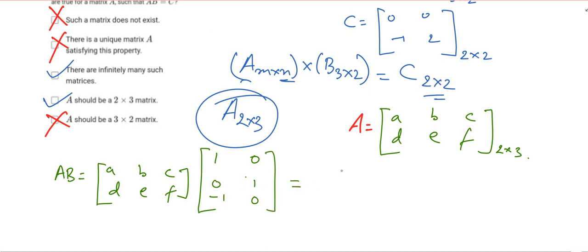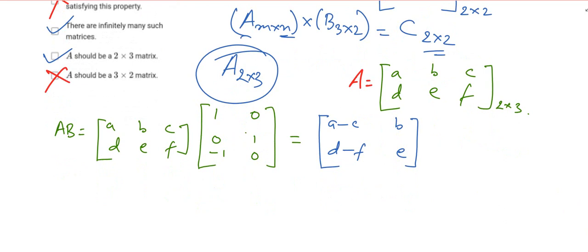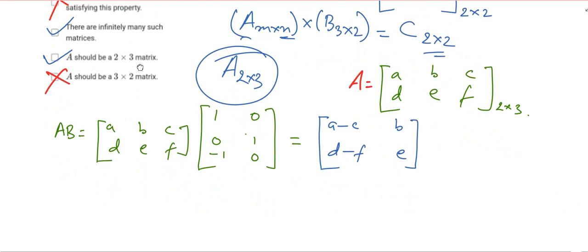What this would give us - the result would be a matrix of order 2×2. It would be a-c, b will get cancelled and minus c, and then we'll get b only. Then again it is d-f, and here it is e.